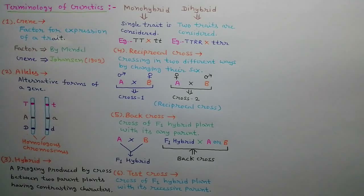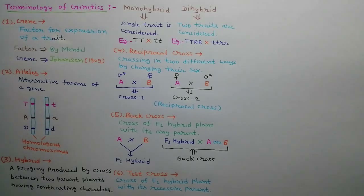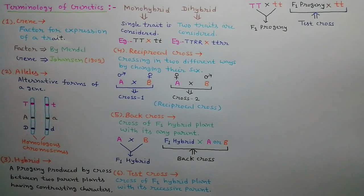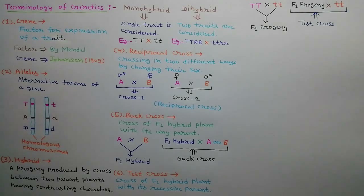When an F1 hybrid is crossed with its recessive parent plant, it is called a test cross. Test cross is used to find out whether the F1 progeny is hybrid or not. A 1:1 test cross ratio represents that the F1 progeny is hybrid. As shown in the diagram, a pure tall plant is crossed with a pure dwarf plant to produce the F1 hybrid, which is then crossed with its pure dwarf parent to detect whether it is hybrid or not.